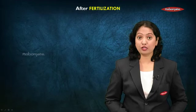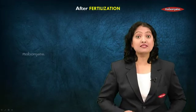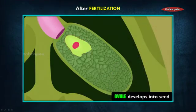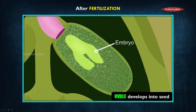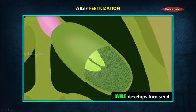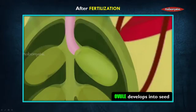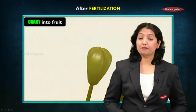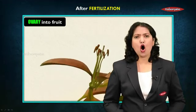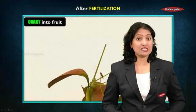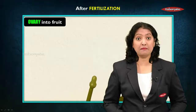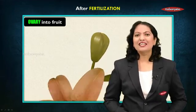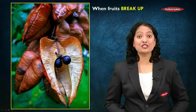After fertilization, the zygote which is unicellular starts dividing vigorously. The ovule, because of the development of the zygote, converts into the seed. The ovary is then converted into the fruit. After fertilization, all the other parts of the flower — like the petals and sometimes the sepals and stamens — fall off, while the ovary enlarges in size and converts itself into fruit.